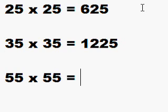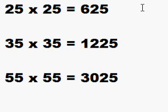Let's do the last one. 55 times 55. Again we put down 25, and now we need to multiply 5 from the front of our 55, 5 times the next number which is 6. 5 times 6 is 30, and so 55 times 55 is 3025.